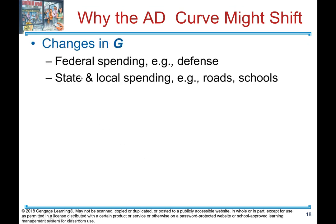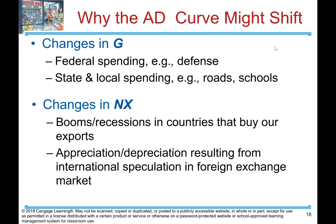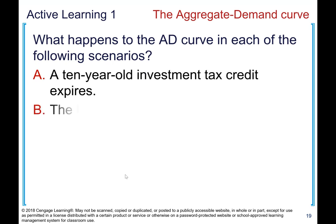Changes in government spending — such as federal defense spending and state and local government spending on roads and schools — will shift aggregate demand. If government spending increases, aggregate demand shifts right; if it decreases, it shifts left. Changes in net exports include booms and recessions in countries that buy our exports, and appreciation or depreciation of the dollar from international speculation in foreign exchange markets — both lead to changes in net exports.